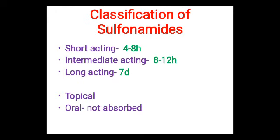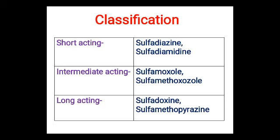Classification of sulfonamides is based on duration of action: short-acting (4 to 8 hours), intermediate-acting (8 to 12 hours), long-acting (7 days), topical sulfonamides, and orally given but not absorbed. Short-acting example: sulfadiazine.